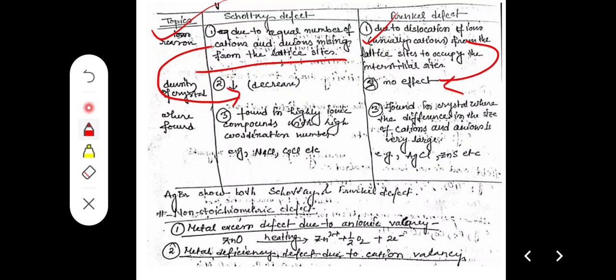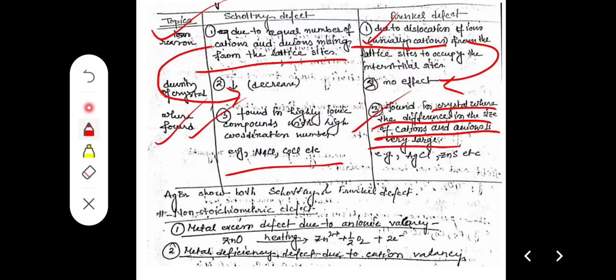In Frenkel defect, cations are most probably the ones dislocated. Schottky defect is found in highly ionic compounds with high coordination numbers, for example NaCl and caesium chloride. Frenkel defect is found in crystal structures where the difference in size of cations and anions is very large, for example AgCl and ZnS.